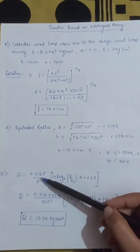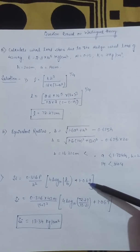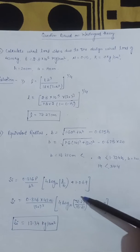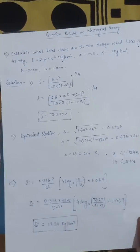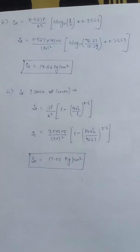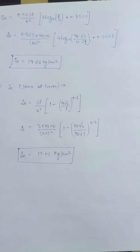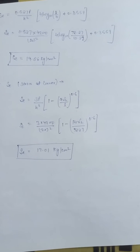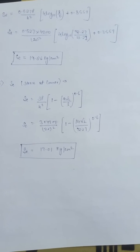For stress at interior region, we have a formula: 0.527P/h² [4 log₁₀(L/b) + 0.3559]. We put all the values in this formula. The value is 19.86 kg per cm².